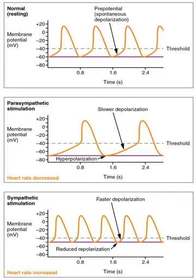Cardiac physiology, or heart function, is the study of healthy, unimpaired function of the heart, involving blood flow, myocardium structure, the electrical conduction system of the heart, the cardiac cycle, and cardiac output, and how these interact and depend on one another.